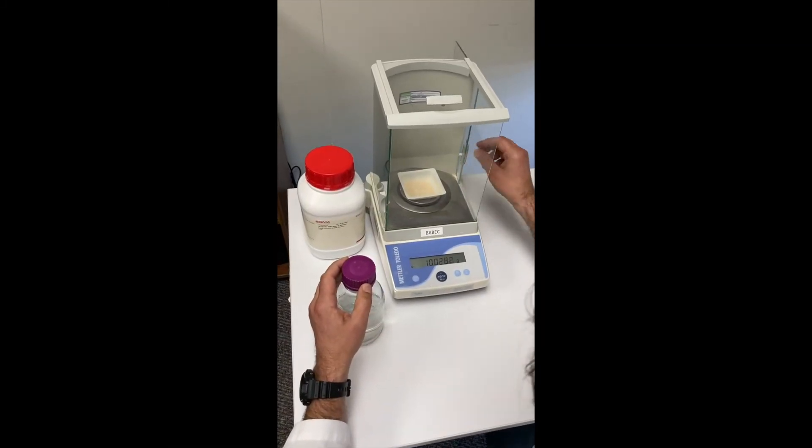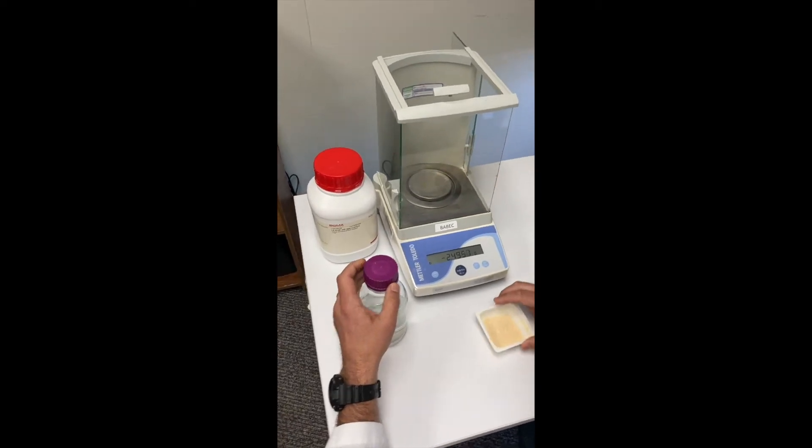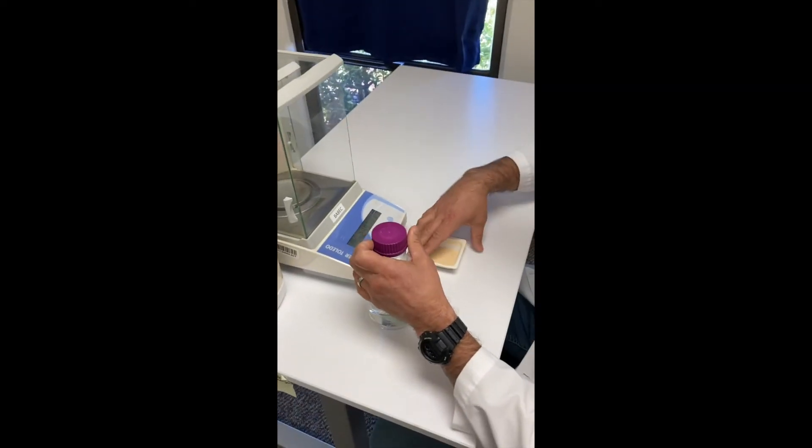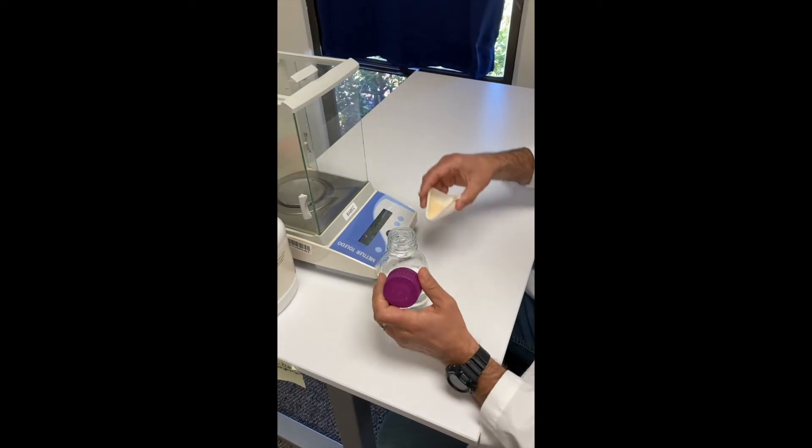To make LB agar with the antibiotic ampicillin, we begin with the same steps we did to make LB agar, adding the LB agar powder to water.